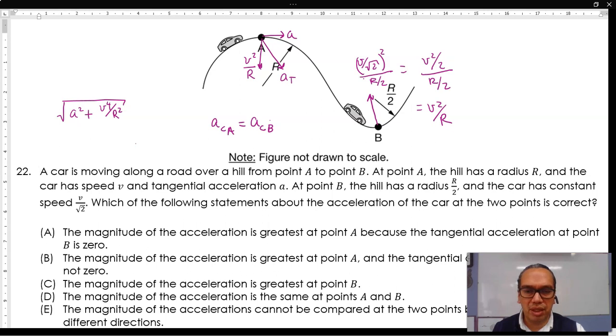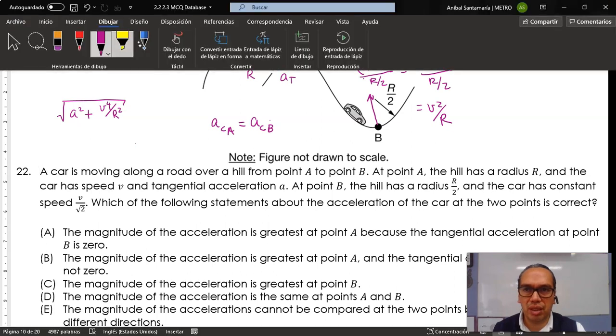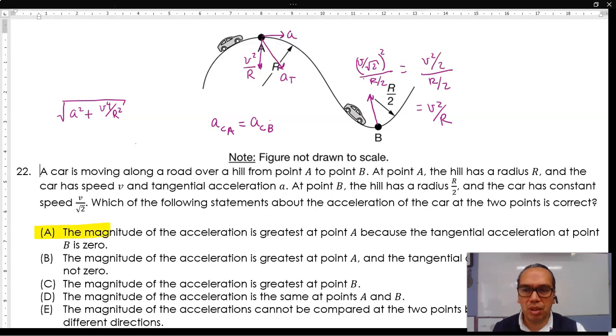D, the magnitude of the acceleration is the same at points A and B, false also. E, the magnitude of the accelerations cannot be compared because they are in different directions, that is of course incorrect. And so the correct option is option A. Thank you.